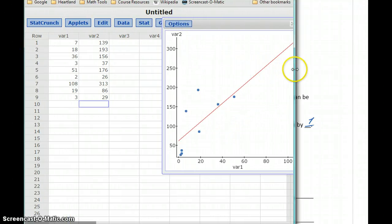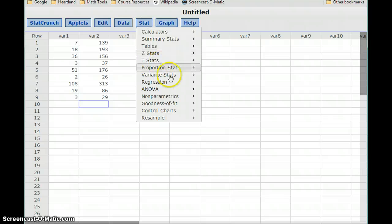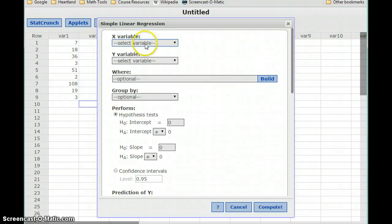So to get our line of best fit, well, the line of best fit we already have, to get the actual straight line equation in slope intercept form, we'll select Stat, Regression, since we're trying to create a regression model, and Simple Linear, since we just want a linear model.